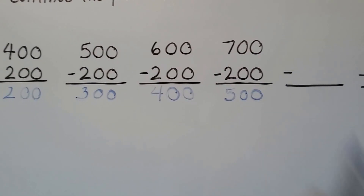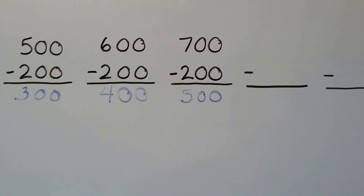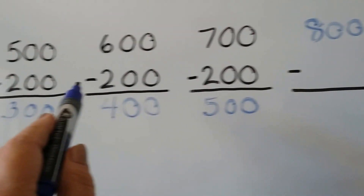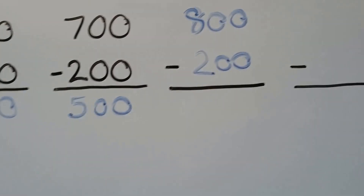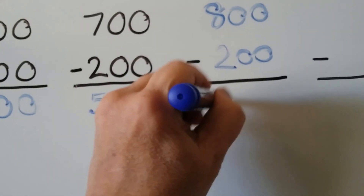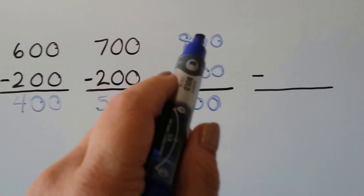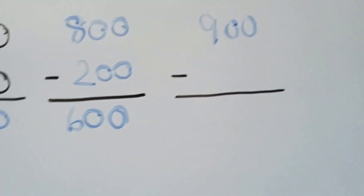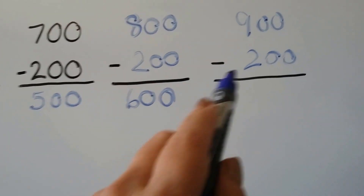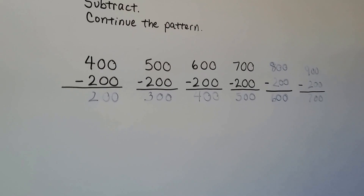The minuend went four hundred, five hundred, six hundred, seven hundred — so the next one would be eight hundred. The subtrahend stays the same at two hundred. Looking at the pattern: two hundred, three hundred, four hundred, five hundred — the difference would be six hundred. And the one after that: minuend is nine hundred, subtrahend is still two hundred, and nine take away two is seven, so the difference is seven hundred.